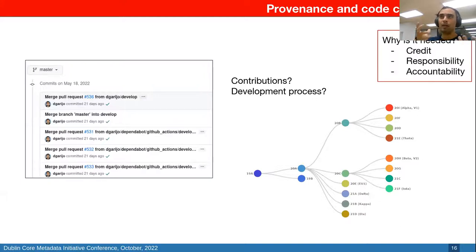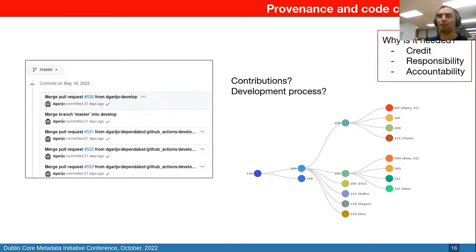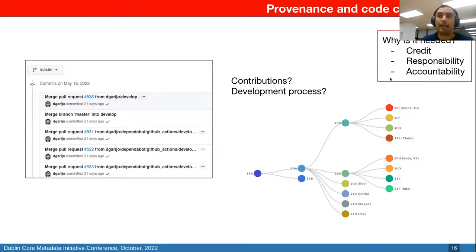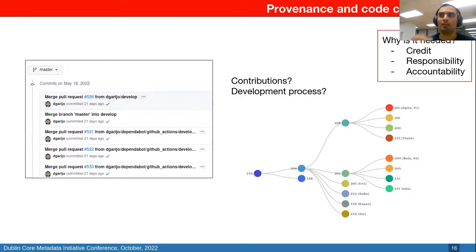Depending on what you're interested in, you can drill down into the social aspect of code itself, tracking all the contributions people make to repositories. By opening a source code repository, you're open to contributions from the community — people start forking, working on contributions, and then merging them back. You get a very complex web of contributions reflected in the code repository, which is important for credit, responsibility, and accountability, as bugs could have been introduced by some of these open community contributions.